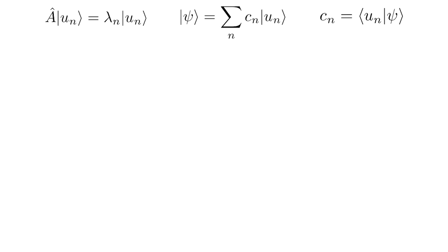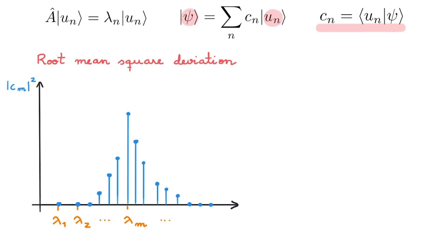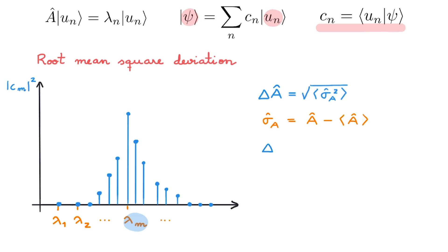We need a final refresher before we can discuss uncertainty principles, which is the idea of a root-mean-square deviation. We consider again the state psi in the u basis with the usual expansion coefficient C, and draw a pictorial representation with a peak around some particular eigenvalue lambda_m. The root-mean-square deviation of A in state psi is called delta A, and it is defined as the square root of the expectation value of sigma_A squared, where sigma_A equals A minus the expectation value of A. Delta A can also be rewritten in an alternative form.